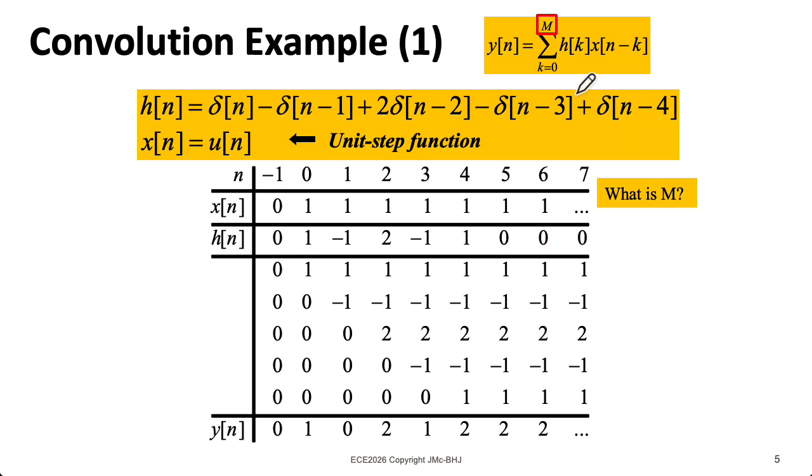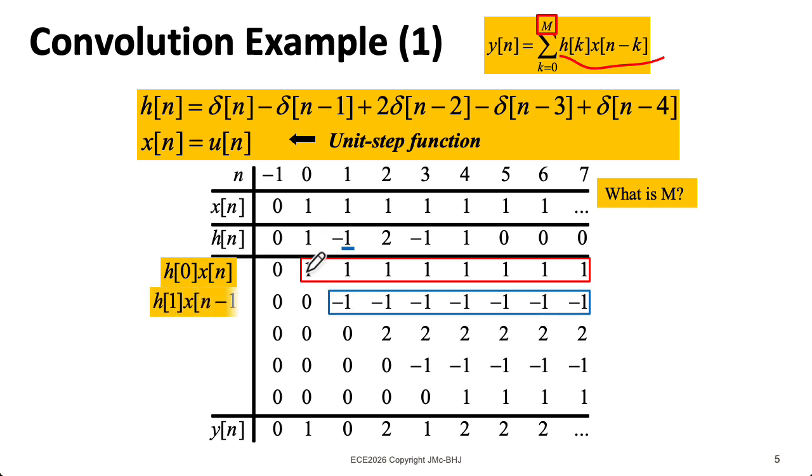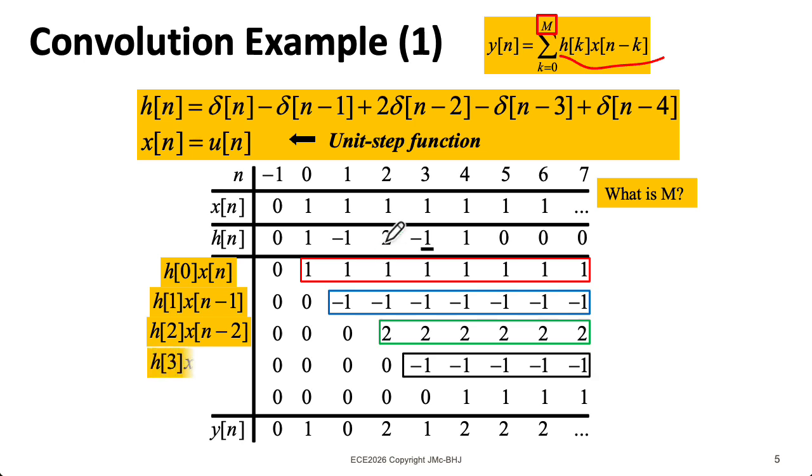And each of the remaining rows corresponds to one of the terms in this summation. So k equals zero corresponds to this first row. So we take x of n, shift it over by zero time units, so it lands in the same spot. And we multiply it by h of zero. Now for the next row, we'll take x of n, which here happens to be u of n, shift it one unit to the right, and then we multiply it by h1, which here is minus 1. And then we keep increasing k. Each time we increment k, we move our x of n one time unit to the right, and we multiply it by the appropriate h of k. So we march all the way down through k equals 4.